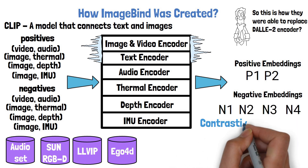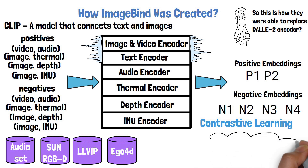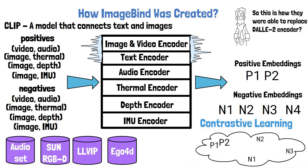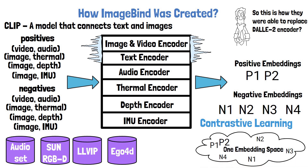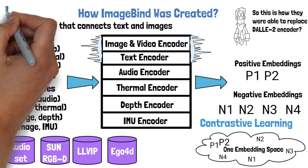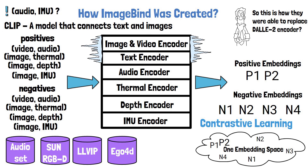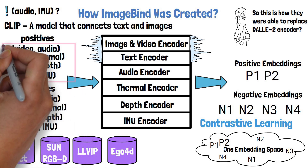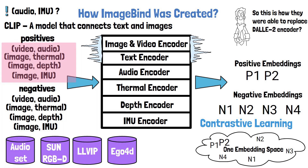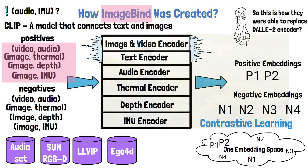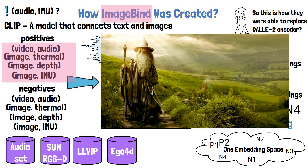They use a contrastive learning approach, which means the loss function the training process minimizes pushes the embeddings of positive samples closer to each other, and also pushes the embeddings of negative samples farther away from each other. This way, the model gradually brings all modalities into the same embedding space. An important note is that it's not feasible to find matching pairs across all different types of modalities, so they only find pairs from each modality with images — and from here comes the name ImageBind, since the image modality binds together all other modalities, and the paper name 'One Embedding Space to Bind Them All.'